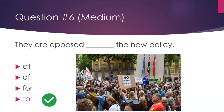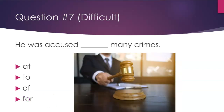Number seven: He was accused ___ many crimes. The options are: at, to, of, for. The answer is: of.